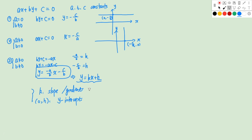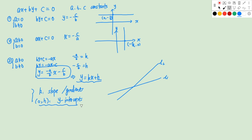The slope or gradient shows how steep the line is. If I have two lines L1 and L2, and L2 is steeper than L1, then L2 will have a greater gradient than L1. The Y intercept shows the line's intersection with the Y axis.